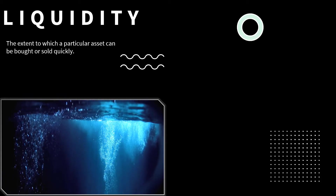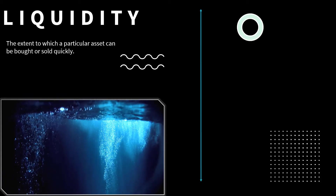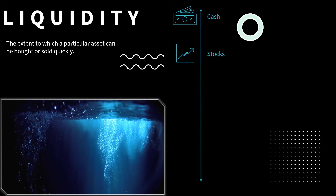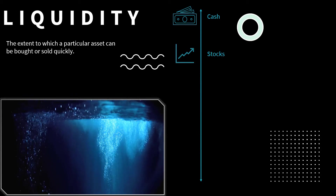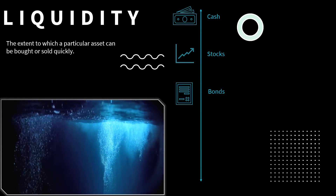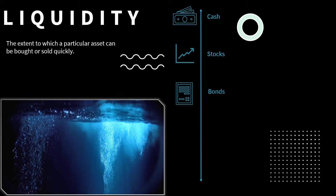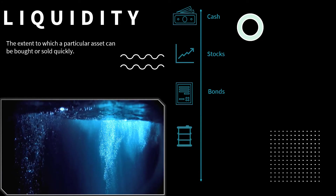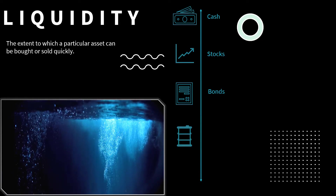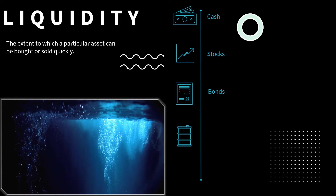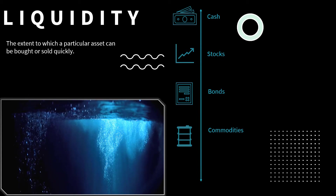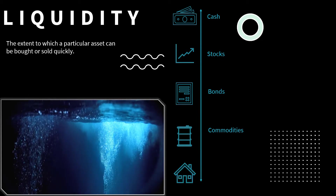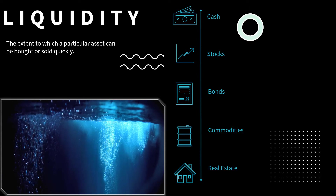Generally speaking, cash is the most liquid asset you can own. Stocks and bonds are non-cash assets which can also be easily converted into cash. The higher the trade volume for a stock or bond, the more liquid it is, because higher trade volumes indicate that the asset can be easily traded at market price.